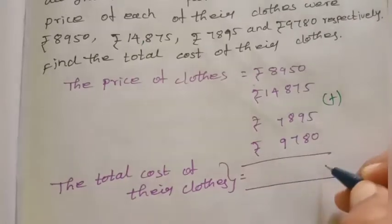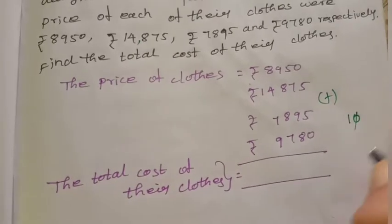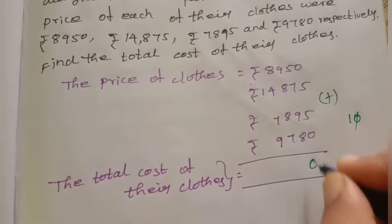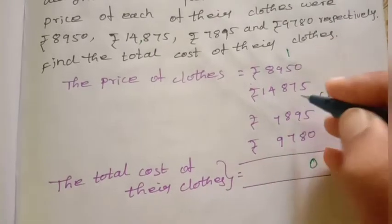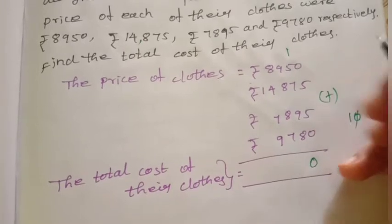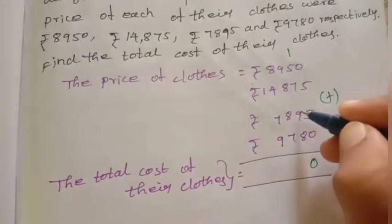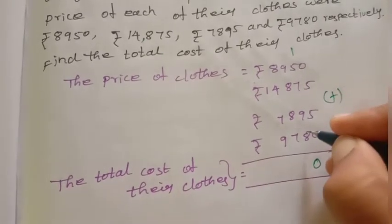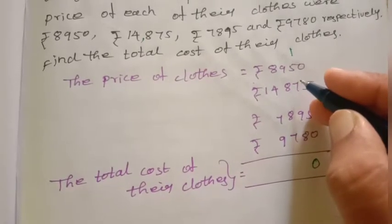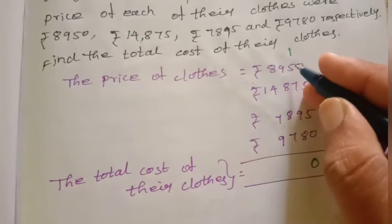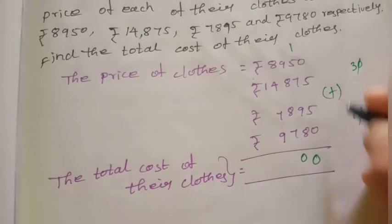Add: 5 plus 5 is 10. Remaining 1, next digital. 9 plus 1 is 10, plus 8 is 18, plus 7 is 25, plus 5 is 30. Write 0 in place, remaining 3, next digital.